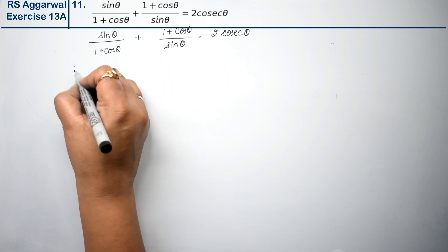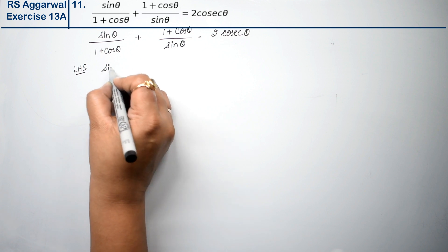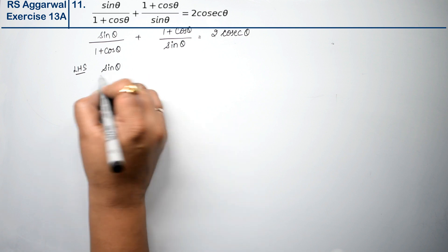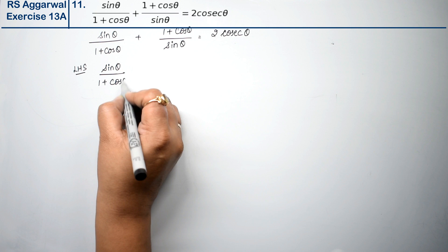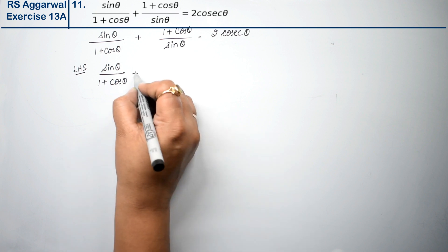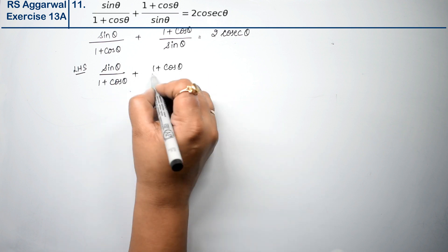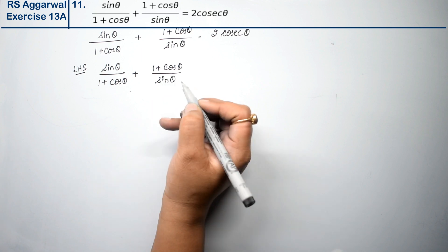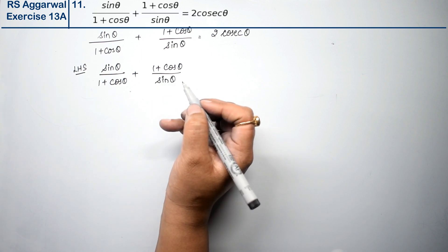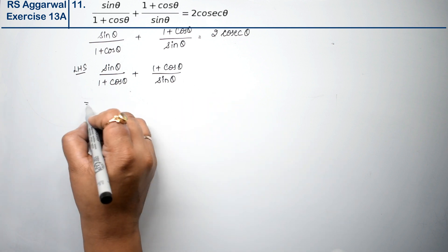Let's take the left-hand side: sin theta upon 1 plus cos theta, plus 1 plus cos theta upon sin theta. This already has sin and cos terms, so let's start solving directly.